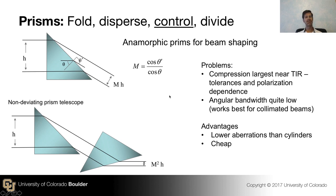One advantage is that you can make this with just a single prism, which is a pretty cheap element. If you want to avoid deviating the beam, you can use two prisms in a symmetric arrangement, giving you two factors of that magnification. It's inexpensive. And if you have nice flat surfaces — which are relatively easy to fabricate — this tends to be very low aberration. Compared to cylindrical lenses, where you've got to ensure a truly cylindrical surface, that can be a little bit tricky.